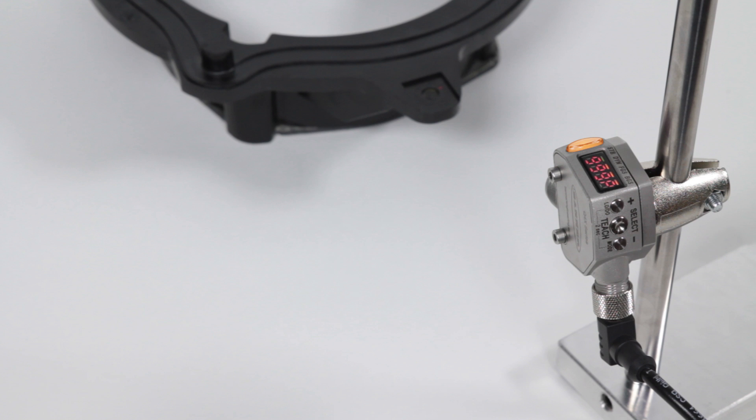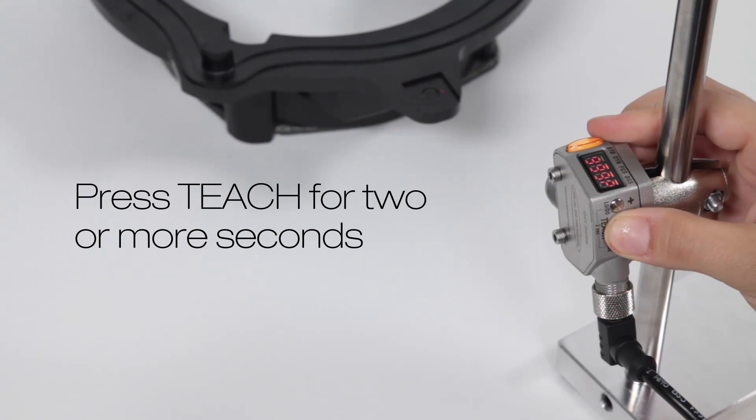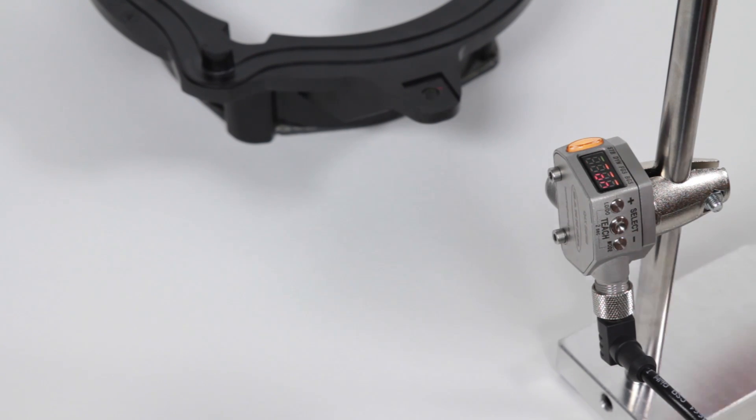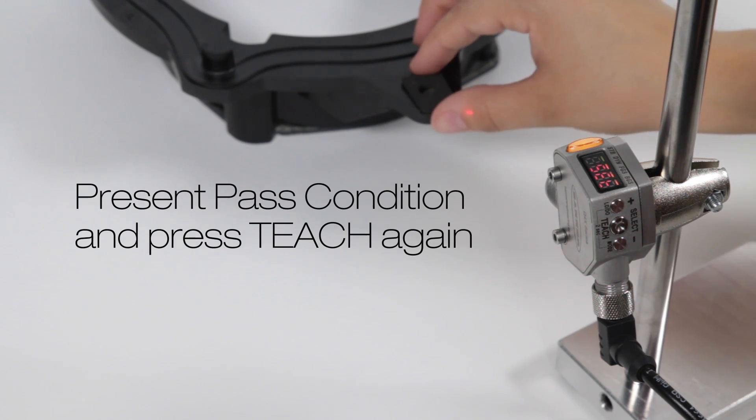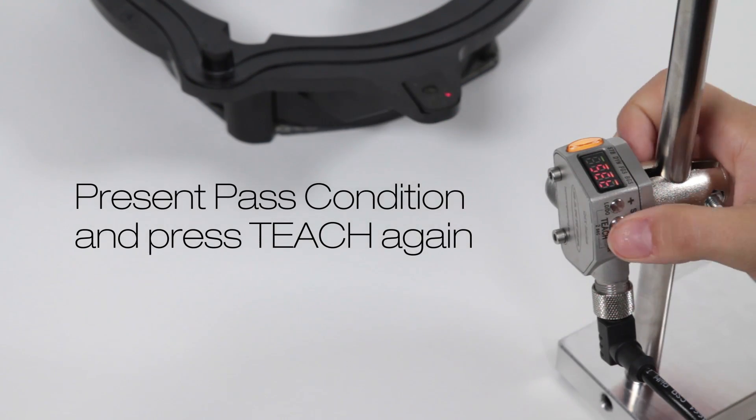For this example, a correctly seated spacer on an automotive speaker case is presented in front of the sensor and the teach button is pressed for two or more seconds. After another click of the button, the Q4X learns this as a reference condition and looks for changes in either height or amount of returned light.